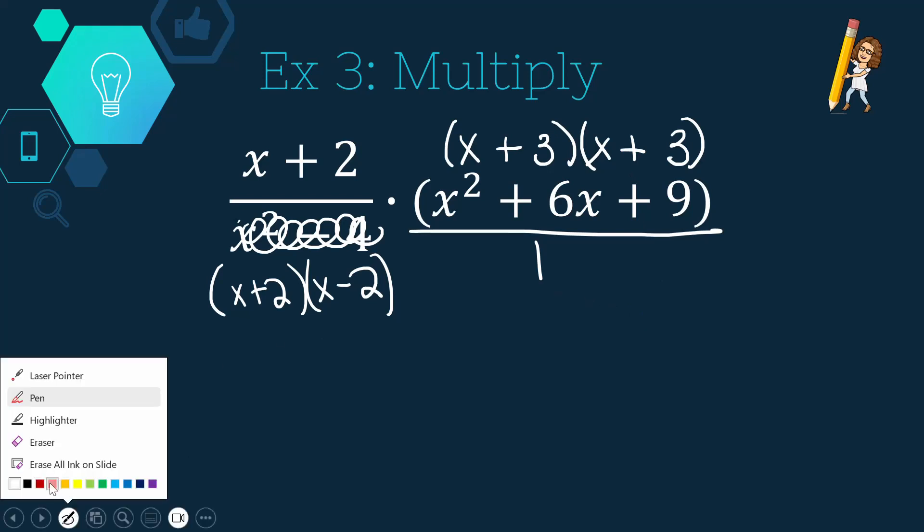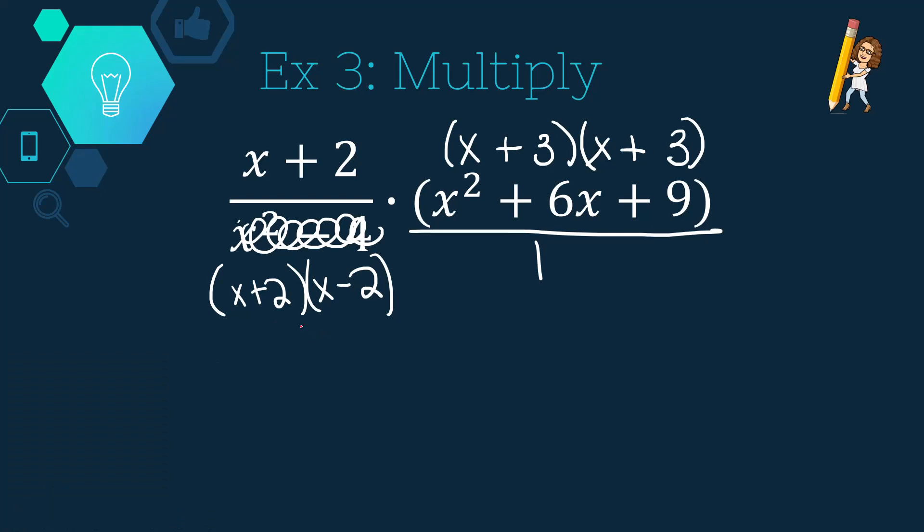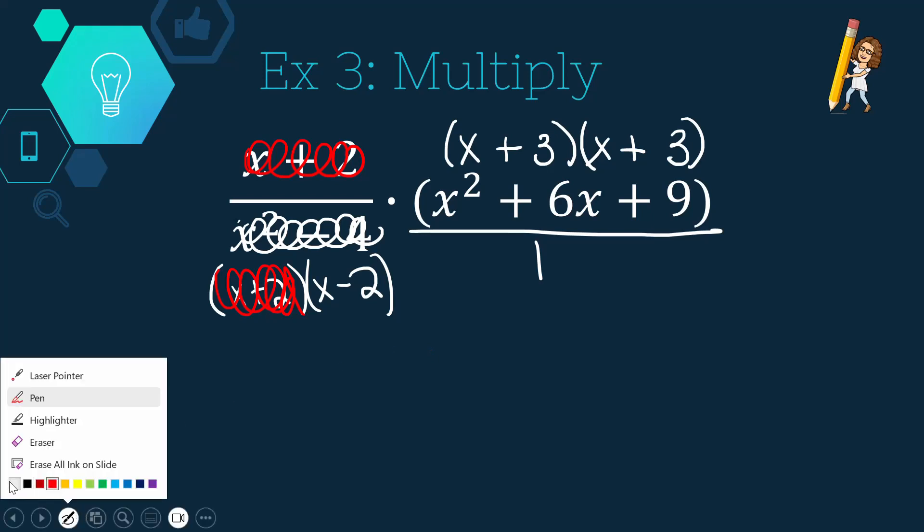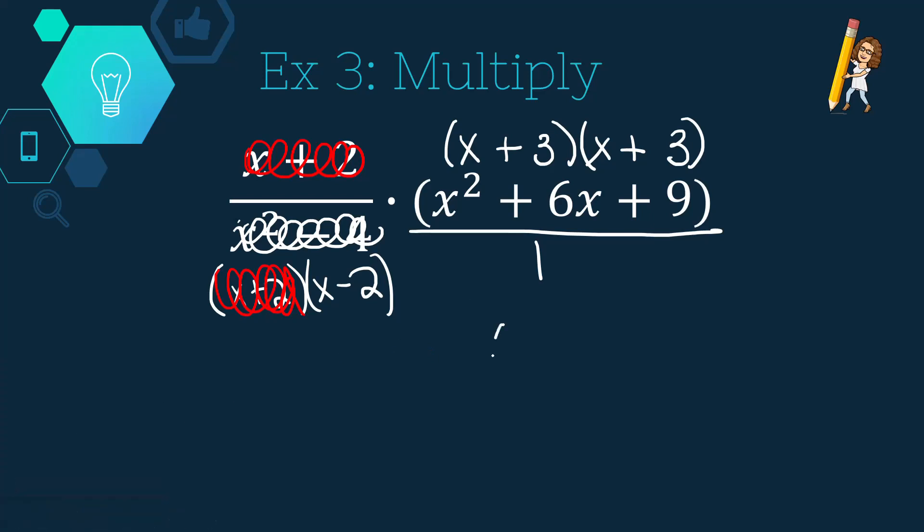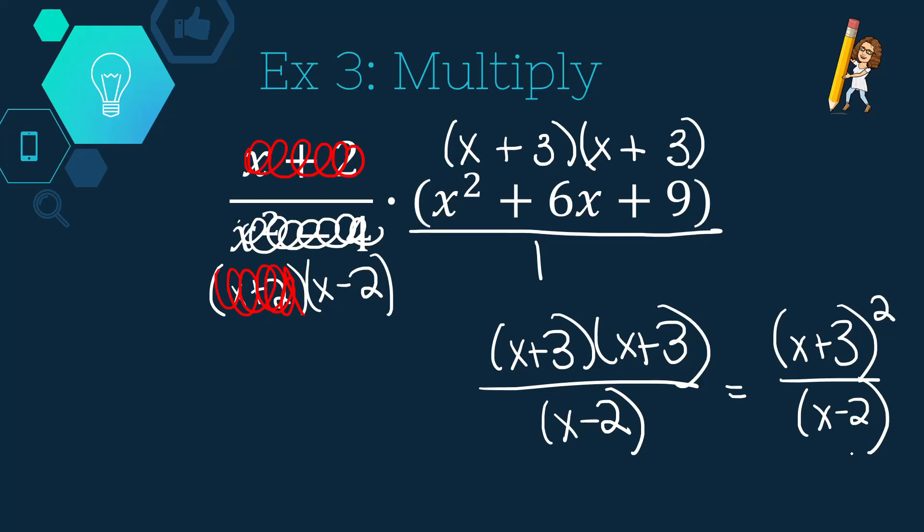So now I'm going to change into my color. Let us simplify what we can. Again, x plus 2s are up and down from one another. Well, that's kind of sad. I don't think I can do anything else. Let's write what's left. x plus 3, x plus 3 on the numerator is still left behind. And I do also have a 1, but really the 1 doesn't matter. And then I have an x minus 2 down here.